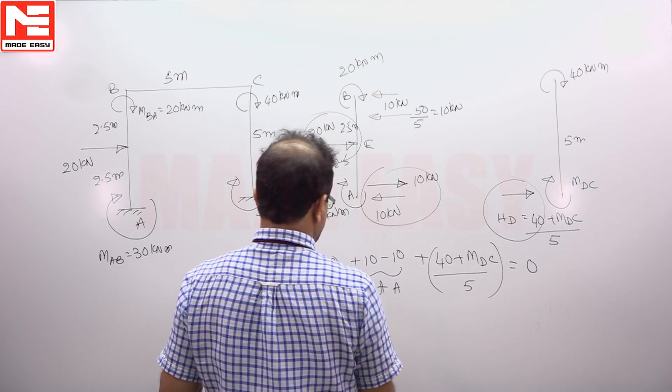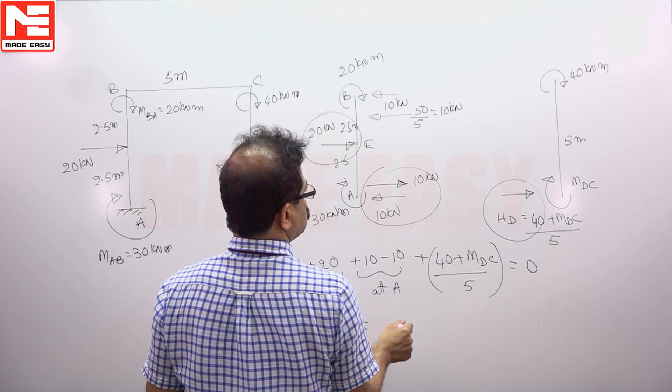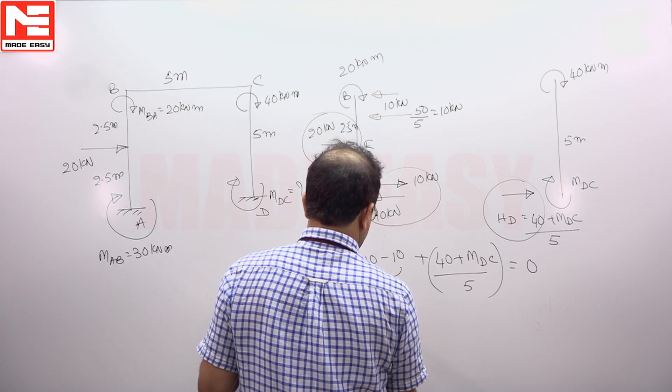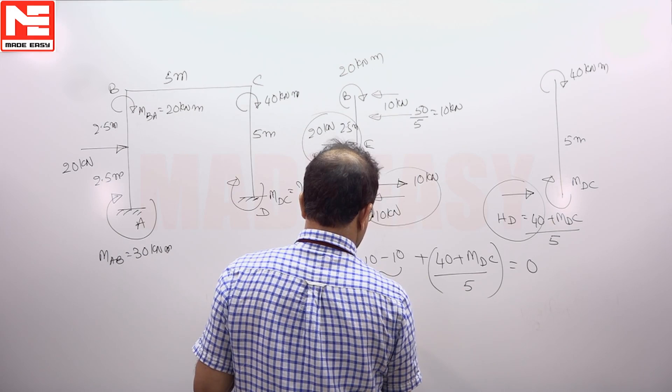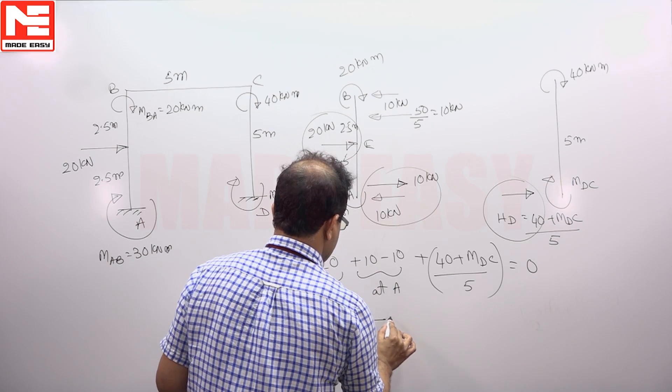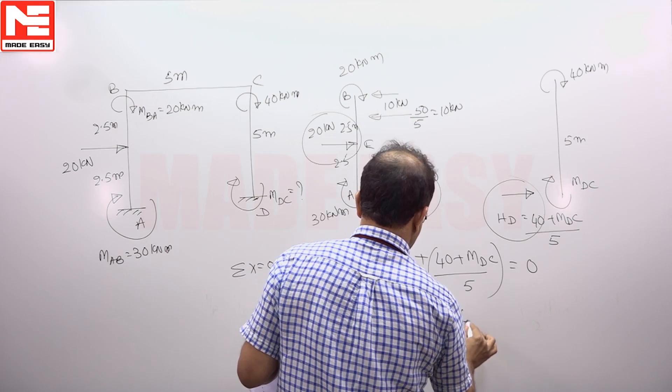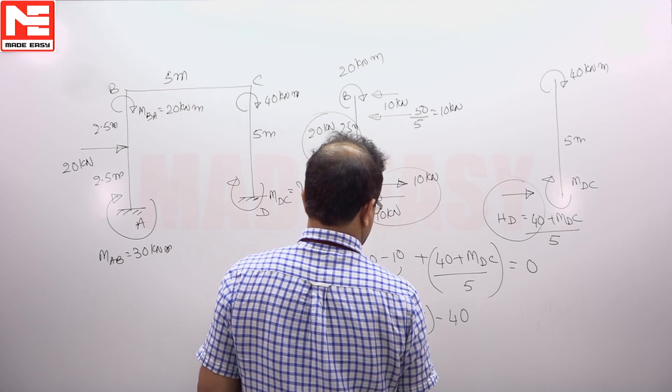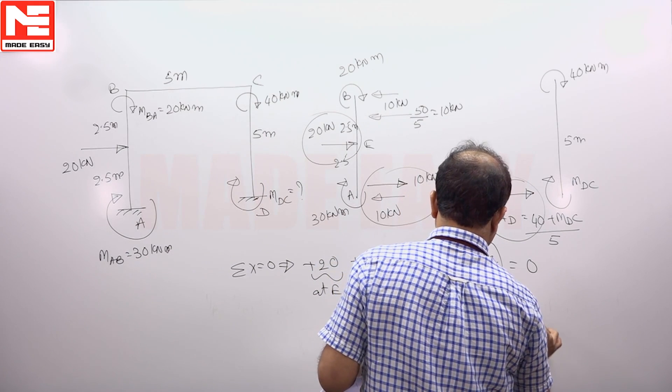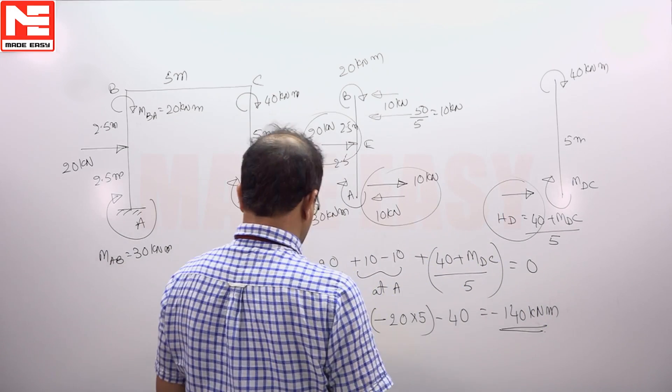So M_DC will get 20, 20 into 500. M_DC will get minus 20 into 5, minus 40. So this here, we write this to be minus 140 kilonewton.